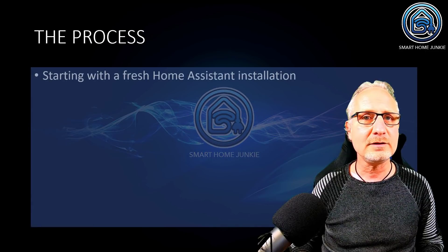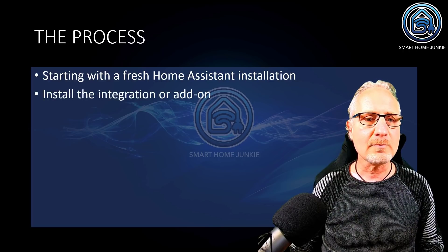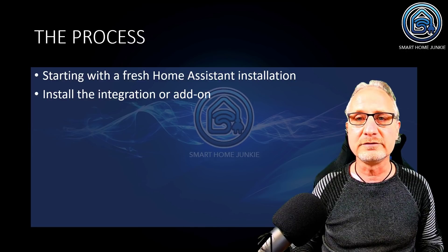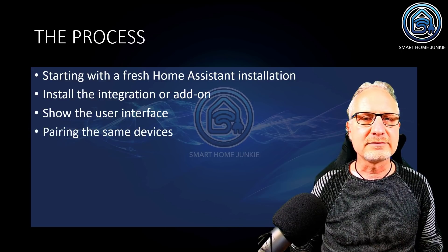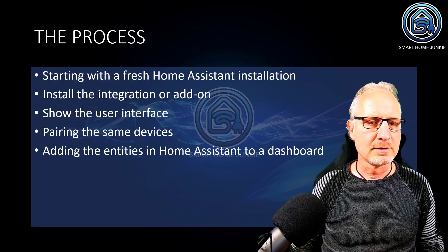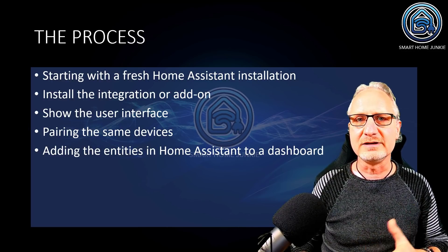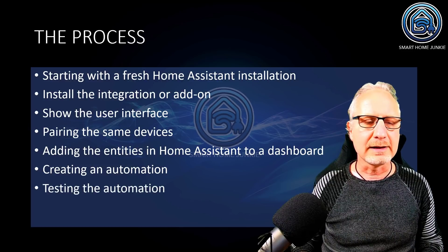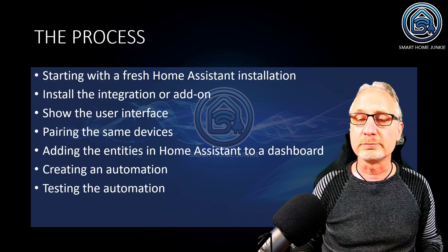The process was as follows. For every integration or add-on, I had to start with a fresh Home Assistant installation. Then I installed the integration or the add-on — ZHA, Zigbee2MQTT, or deCONZ. Then I showed the user interface and how it looks, and then I started to pair the same devices to all three integrations. After that, I tried to add the entities in Home Assistant to the dashboard, and finally I created and tested an automation — basically switching a light or a smart plug based on motion.